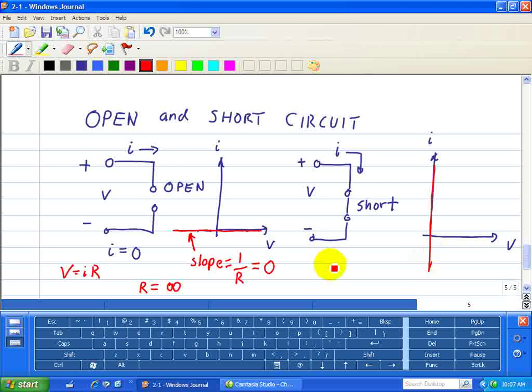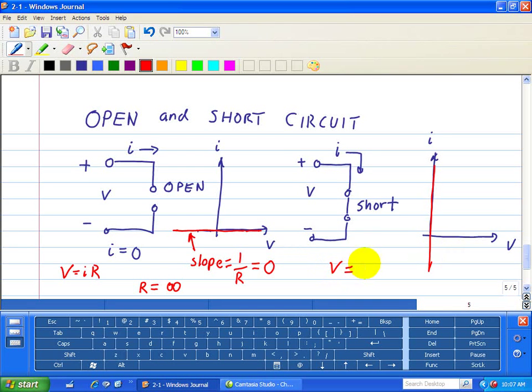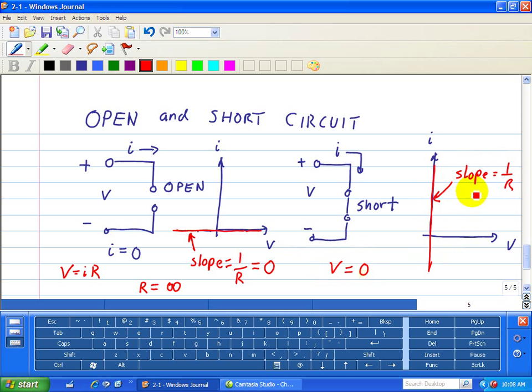So whenever you have a short circuit, the voltage across the short is zero, which is just a piece of wire. Therefore, the resistance implies zero. But we'll see that in this slope, the slope again is equal to one over R.